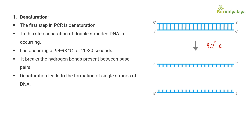The first step in PCR is denaturation. In this step, separation of double-stranded DNA occurs at 94 to 98 degrees Celsius — you can remember the optimum temperature as 92 degrees Celsius — for 20 to 30 seconds. It breaks the hydrogen bonds present between base pairs, leading to the formation of single strands of DNA.